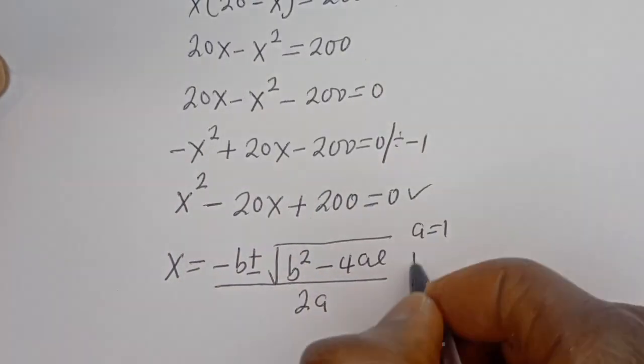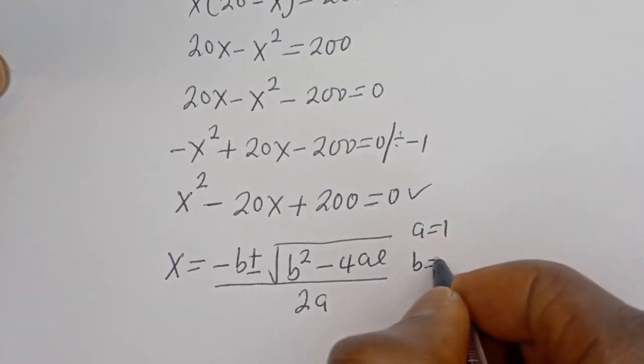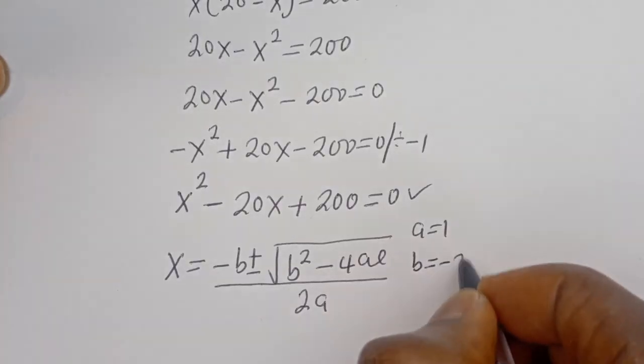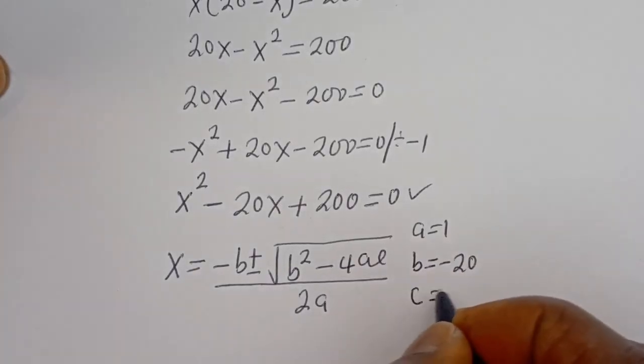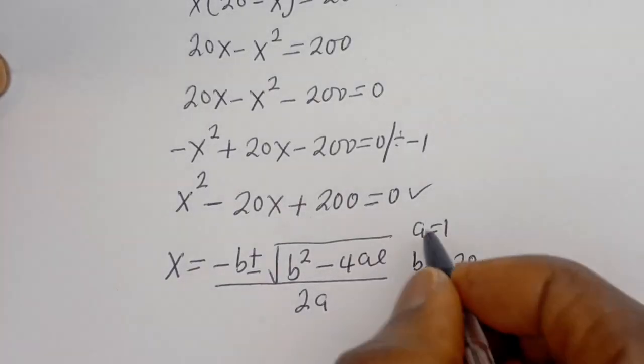From this equation we can identify the coefficients: a equals 1, b equals minus 20, and c equals 200.